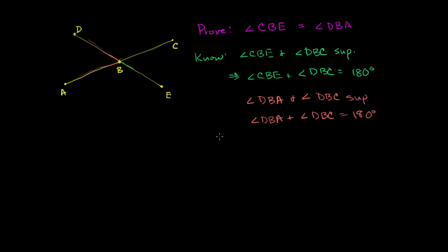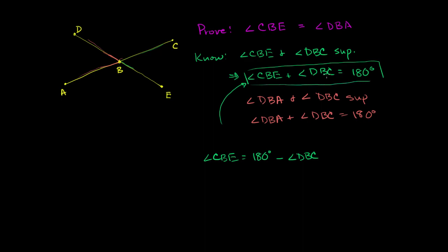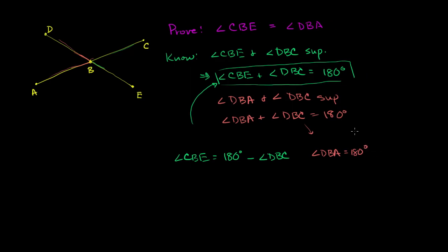From the first equation, we can subtract angle DBC from both sides, and we get angle CBE is equal to 180 degrees minus angle DBC. Then doing the exact same thing to the second equation — subtracting angle DBC from both sides — we get angle DBA is equal to 180 degrees minus angle DBC.